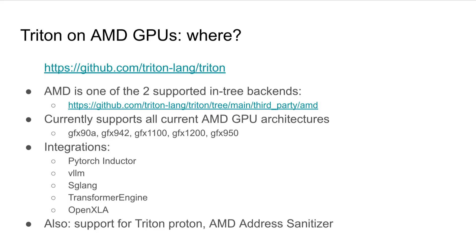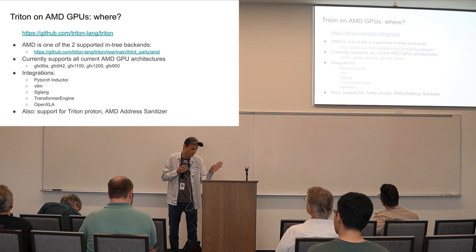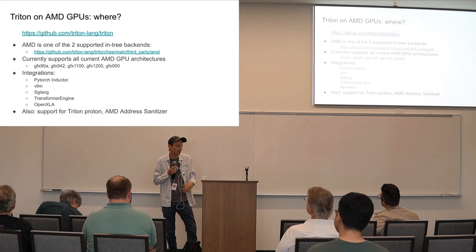It's a bit of a nuance — we have a third-party directory, but if you just build Triton it pulls that in and it works. That third-party directory has all the AMD-specific passes and additions. We have our own compiler.py there which defines the compiler passes. It's highly customizable and useful — we have merge access and control over that directory.